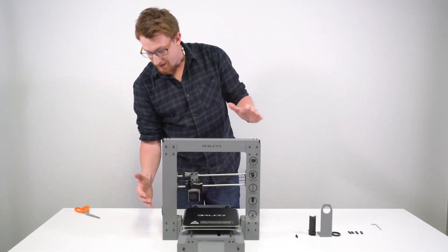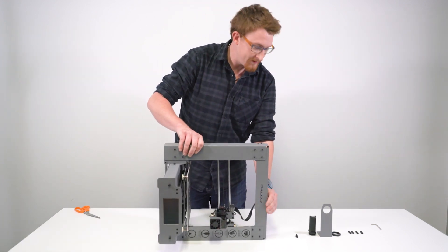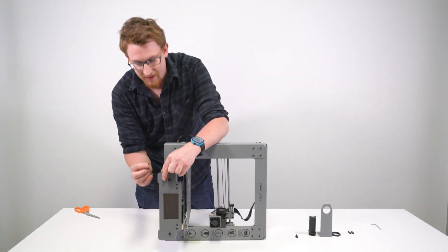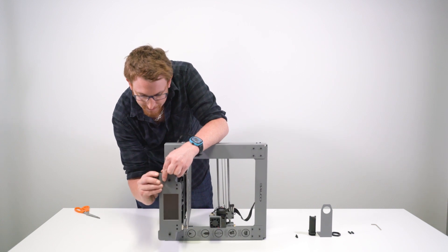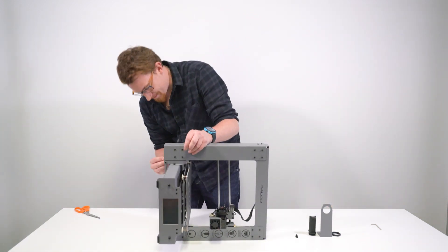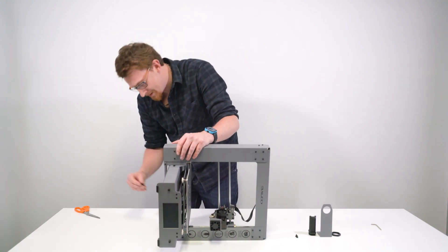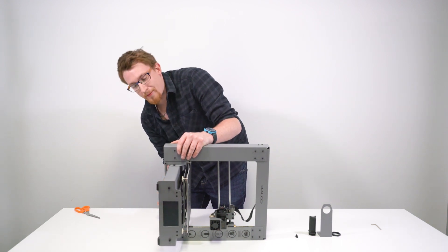Now what we're going to do is tilt the printer on the side, like so, being very careful. Now we're going to grab these rubber feet and we're just going to slide them on the front, like so. And then two at the back as well. Now this is going to stop your printer from shifting during prints and stop any unnecessary vibrations as well.